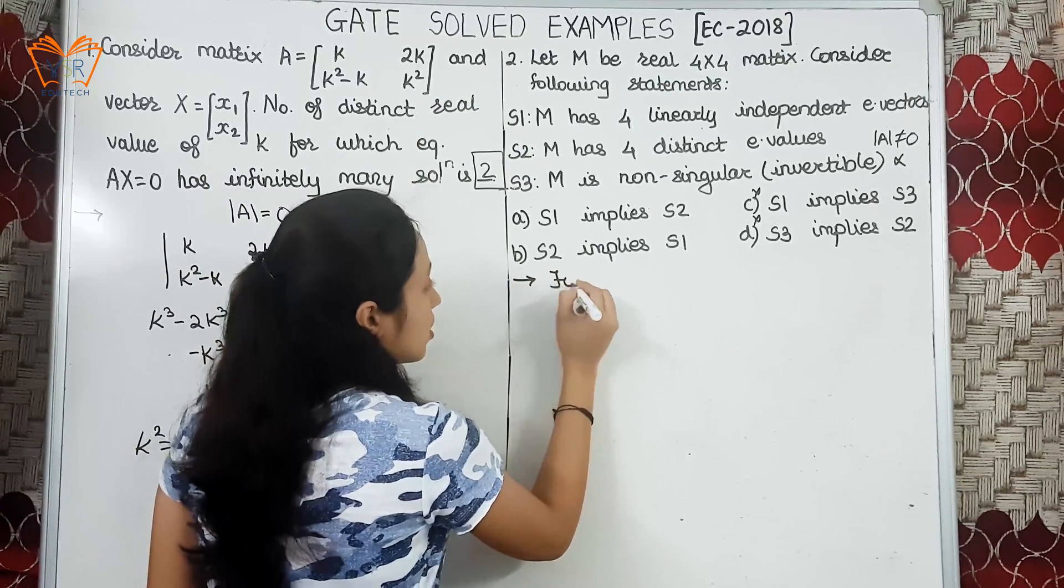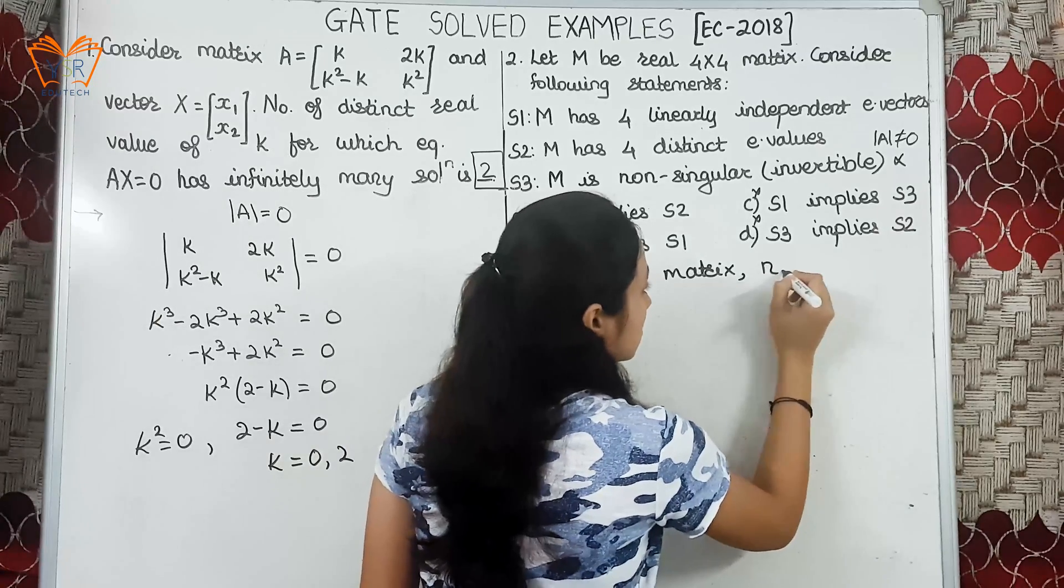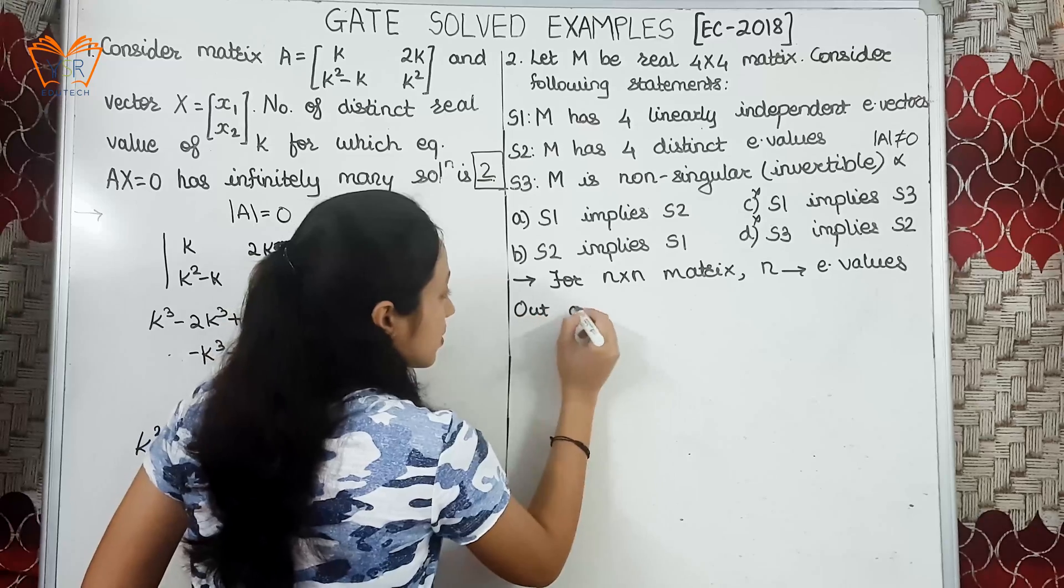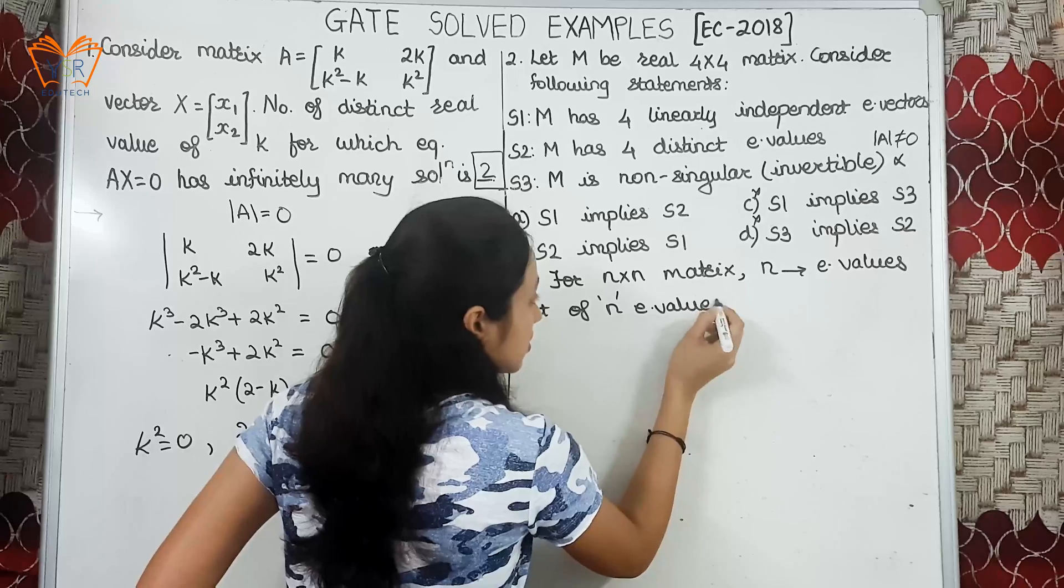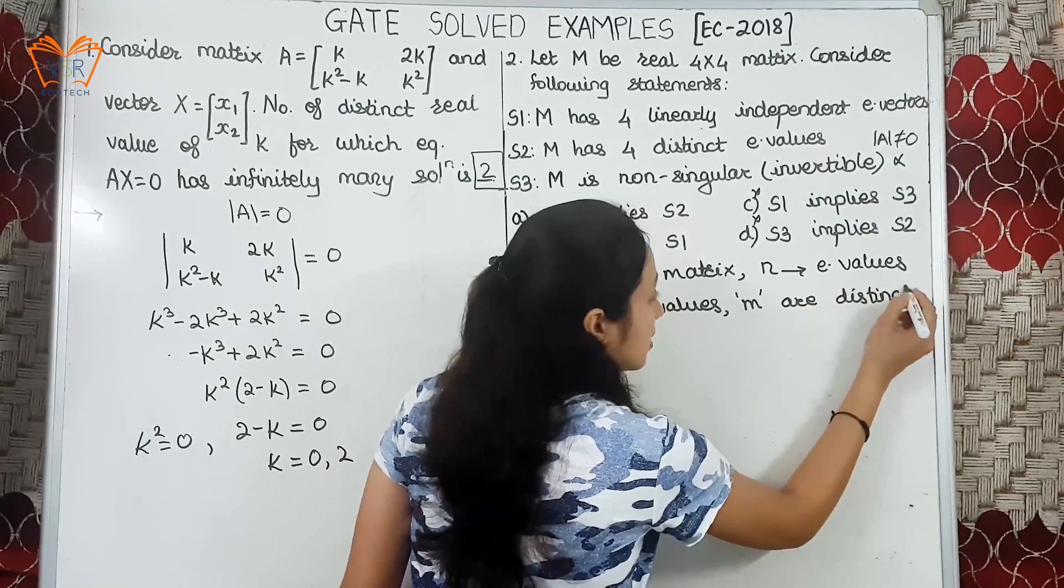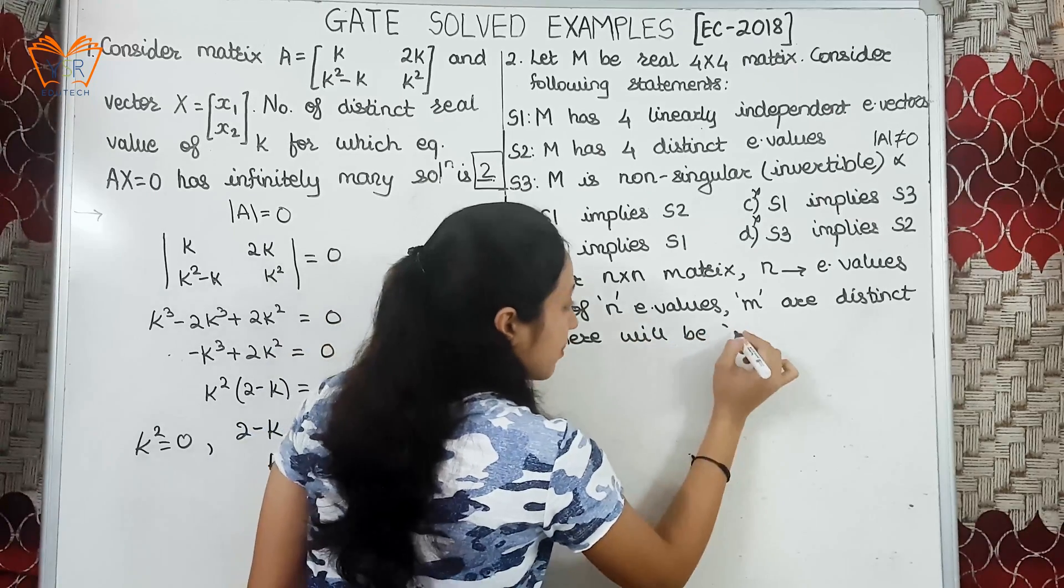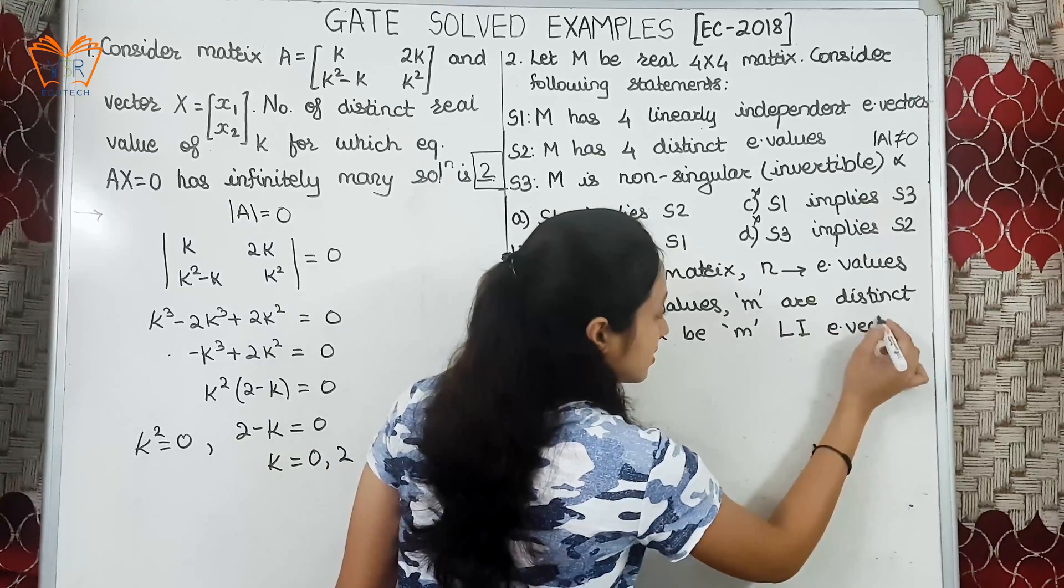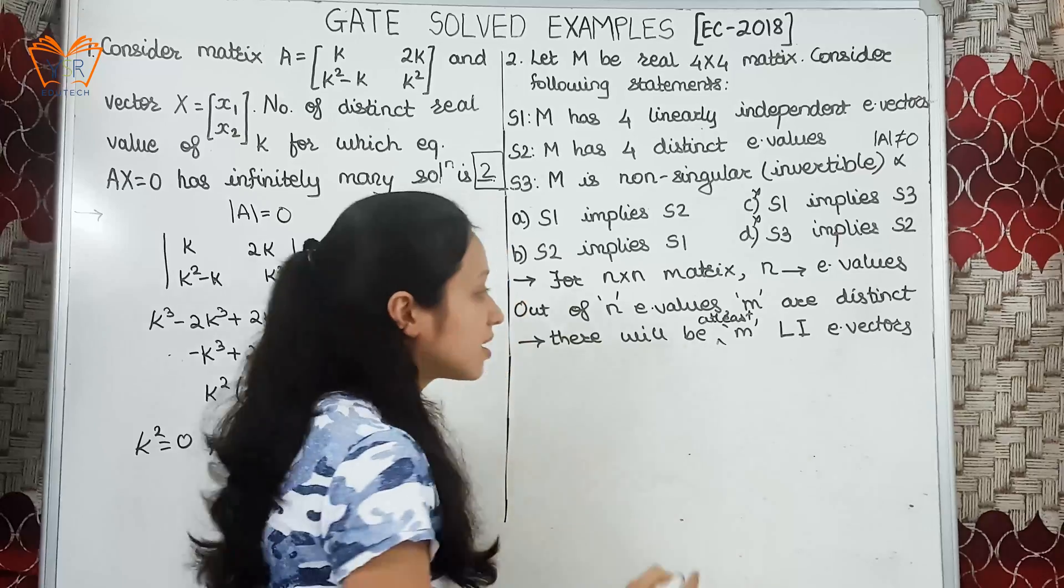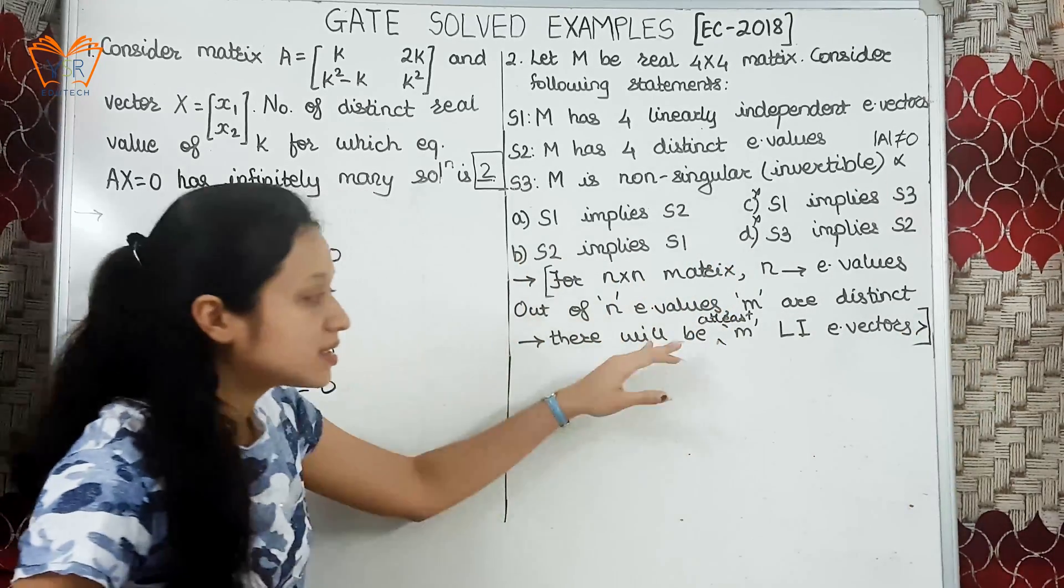Let us now focus on S1 and S2. Before we proceed I will simply write one sentence: for m into n matrix there will be m eigenvalues. Out of these m values, if m are distinct values, there will be at least m linearly independent eigenvectors or there will be more than m. If you find this statement confusing, this is a very important statement. Actually we will understand this statement through one example.